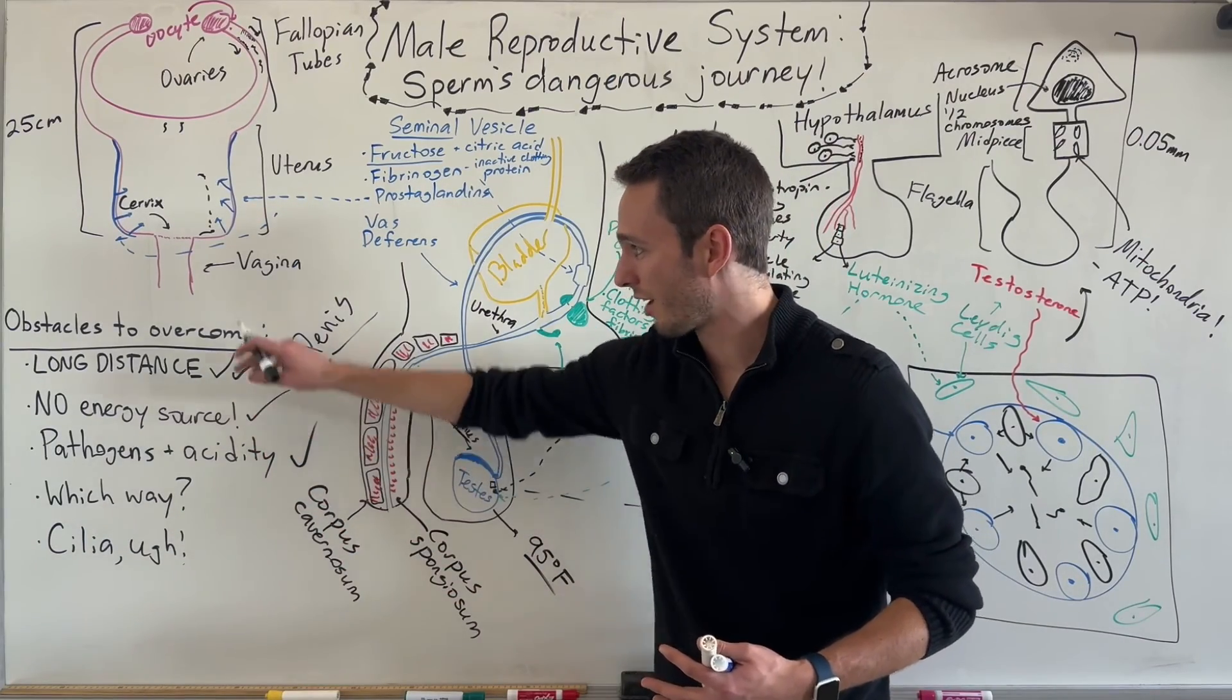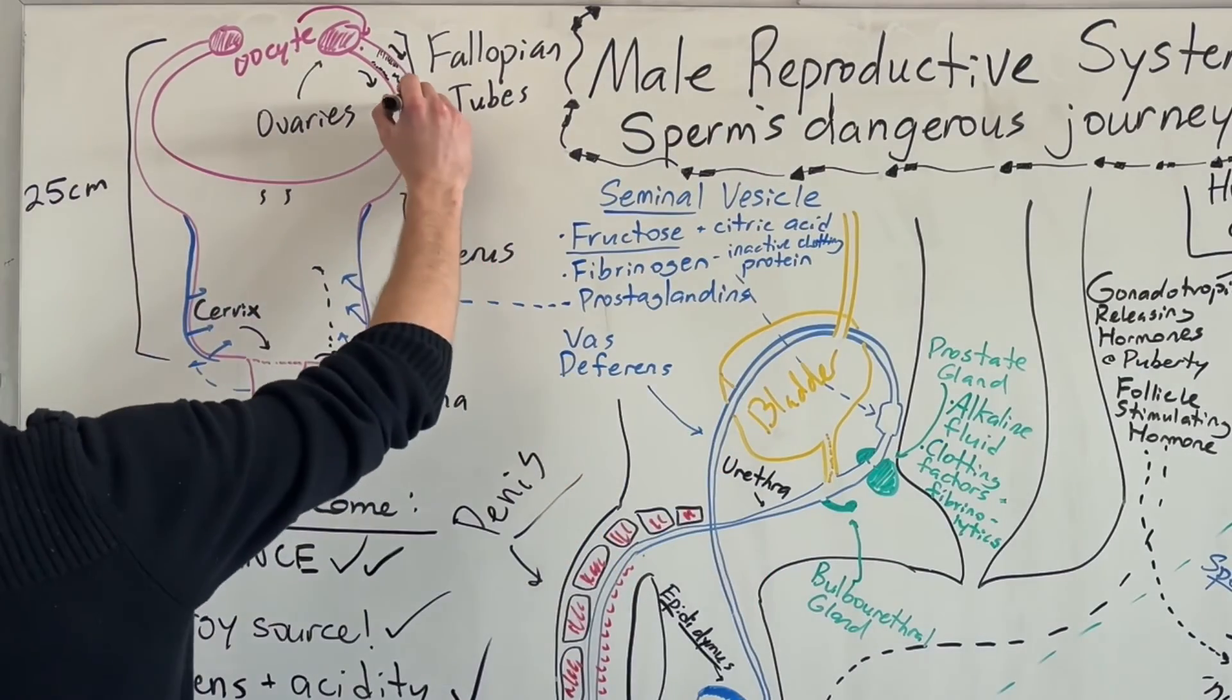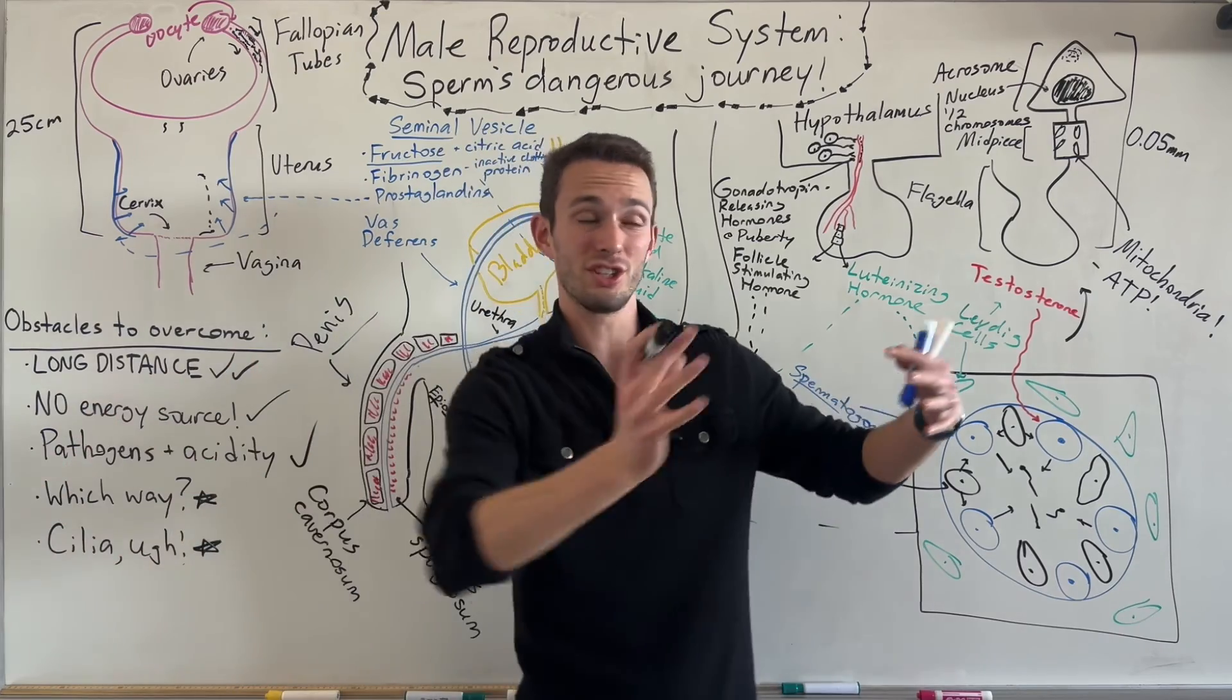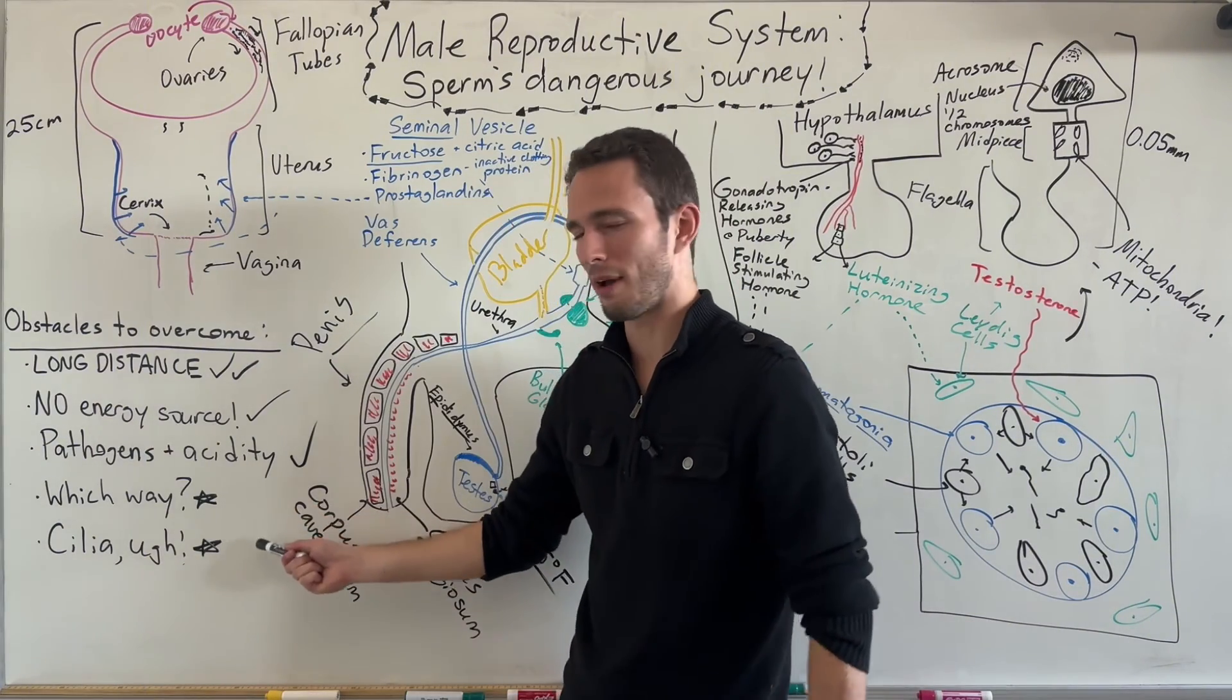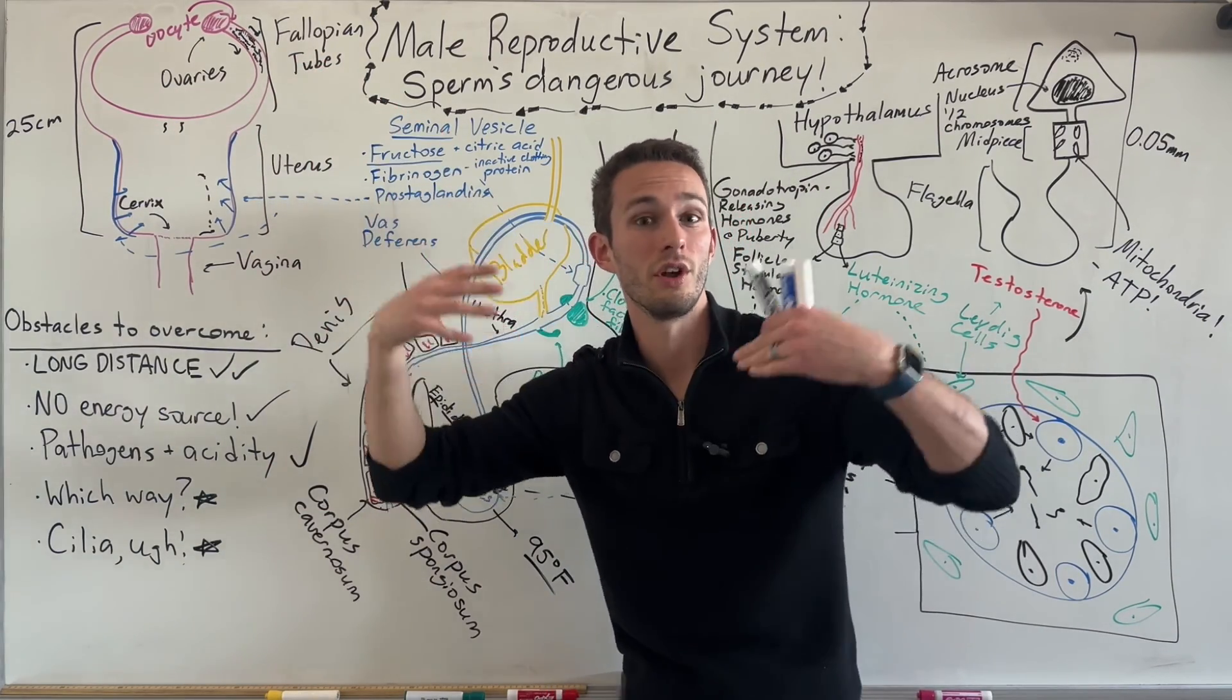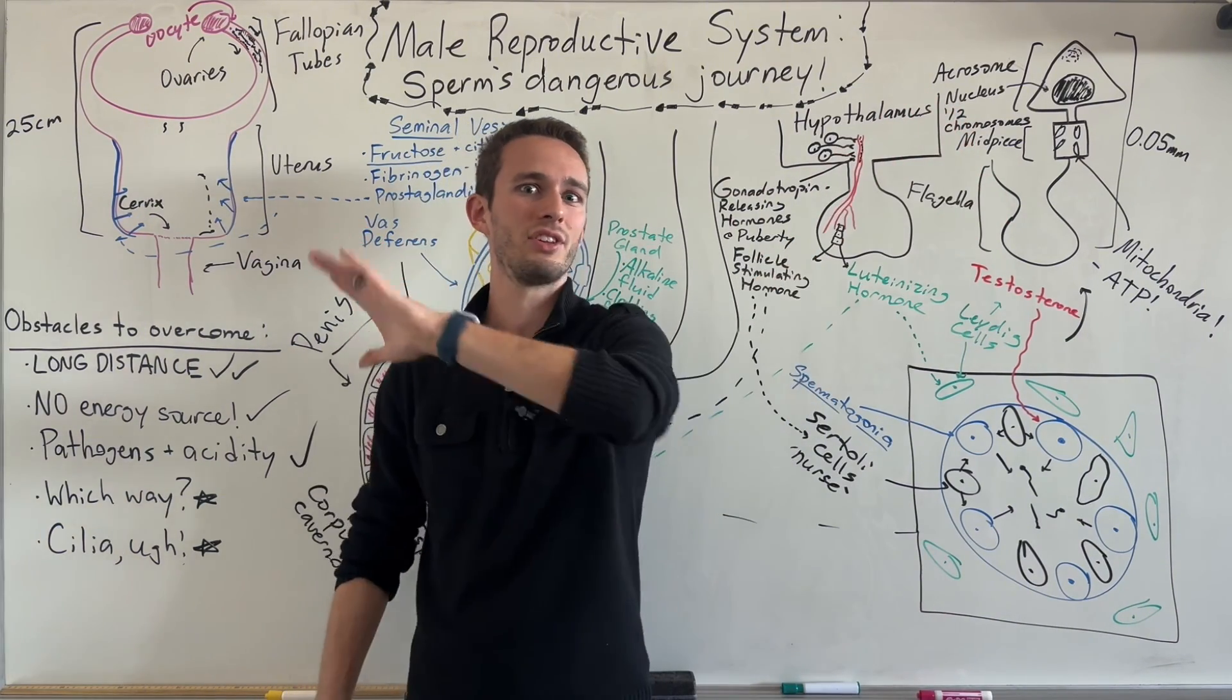There's one more gland, the bulbourethral gland, which has very similar secretions to the prostate. As the sperm are traveling out through the urethra, we still need to help them with this long distance. That is why we have a penis. The penis is a little longer so that when the sperm actually travels out, it's already going to have traveled a little distance. In order to do that properly, we have to have erection. During sexual activity, the corpus cavernosum and corpus spongiosum will be engorged with blood and actually erect the penis so that insertion can happen to get the sperm as far in as possible before they start swimming.